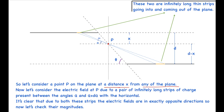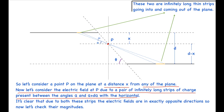In case one, I have considered some point P inside the two planes, as we have to find the field at any general point. Point P is between the two planes, at a distance x from one of the planes. Now let's consider the electric field at P due to a pair of infinitely long strips of charge present between angles alpha and alpha plus d-alpha with the horizontal. I've taken two strips — one on each plane — enclosed in angles alpha to alpha plus d-alpha.